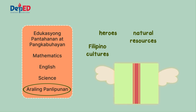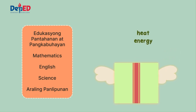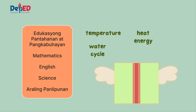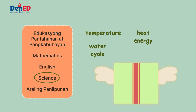We can learn about heroes, Filipino cultures, and natural resources in the subject Araling Panlipunan. The third group of words — heat, energy, water cycle, and temperature — are the topics I learned from which subject? The answer is science! We can learn about heat, energy, water cycle, and temperature in our lessons in science.